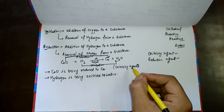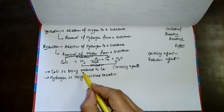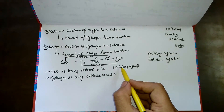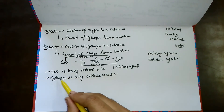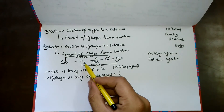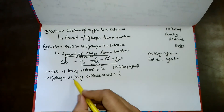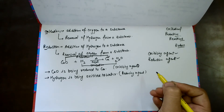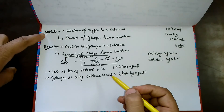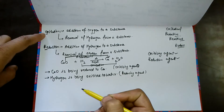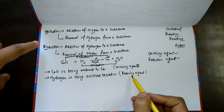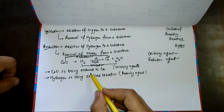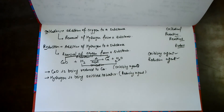Similarly, hydrogen is being oxidized, and because of hydrogen, copper oxide has been reduced. So we call hydrogen the reducing agent. The element which does oxidation is called the reducing agent, while the element which acts as the oxidizing agent is the one doing the reduction. This is the whole concept of oxidation and reduction.